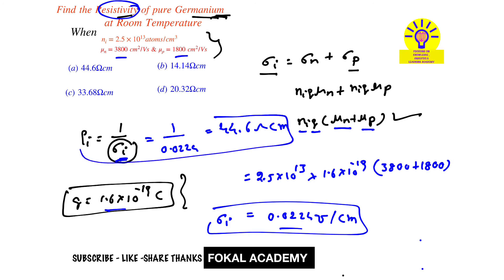This is the resistivity of germanium. From the options, this is the correct option, and this is the process of simplification.